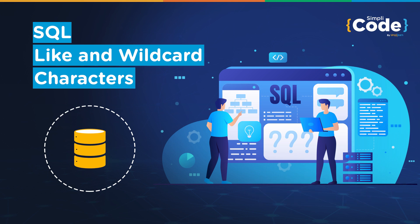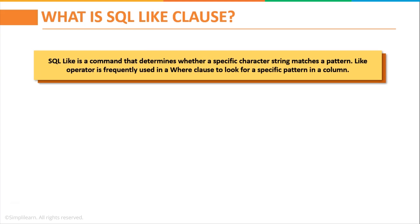So without any further ado, let's get started with today's topic. Firstly, let us understand what is the SQL LIKE clause. The LIKE operator is used to find specific characters in a table's column. It is also used to compare columns with specified values. Together with the WHERE clause, it determines if a pattern matches specific values in a table. It uses wildcard characters, which are characters used to replace one or more characters in a string. You can also use LIKE when only a portion of the value in that table is known.